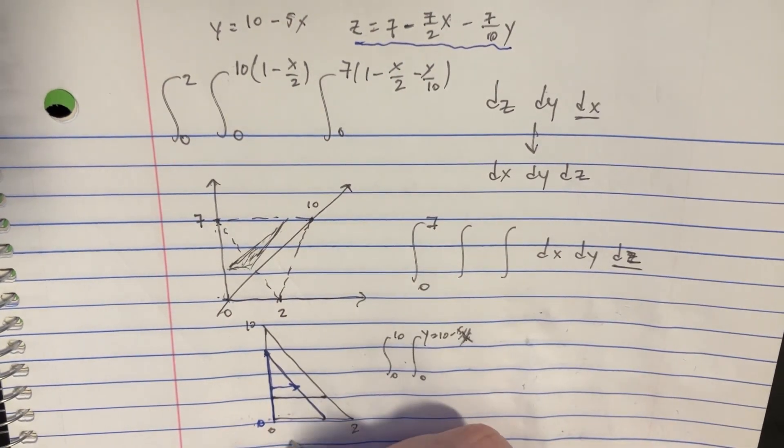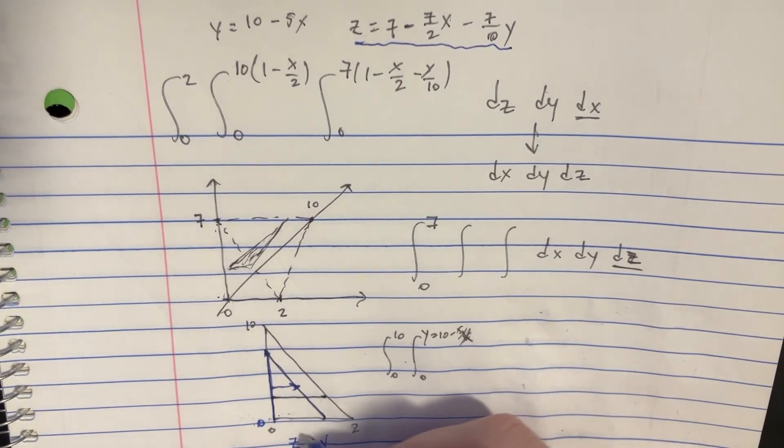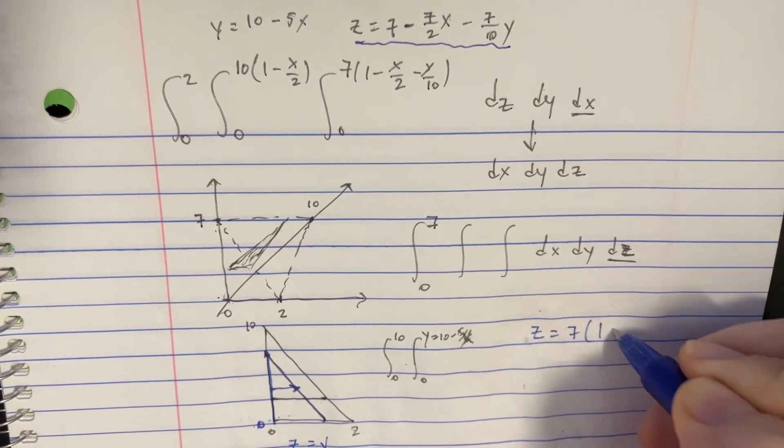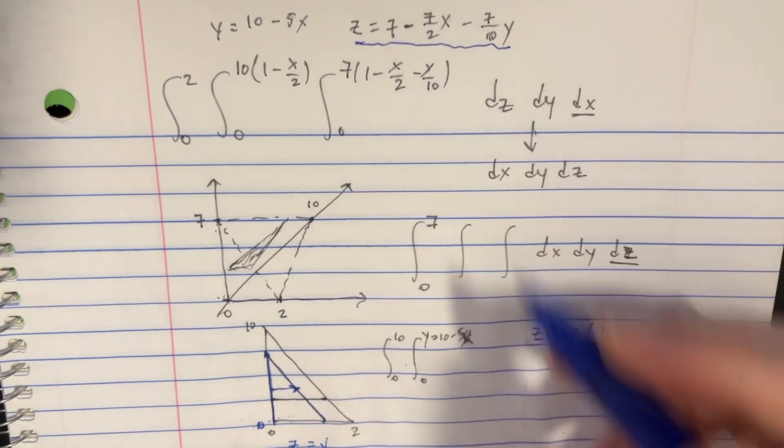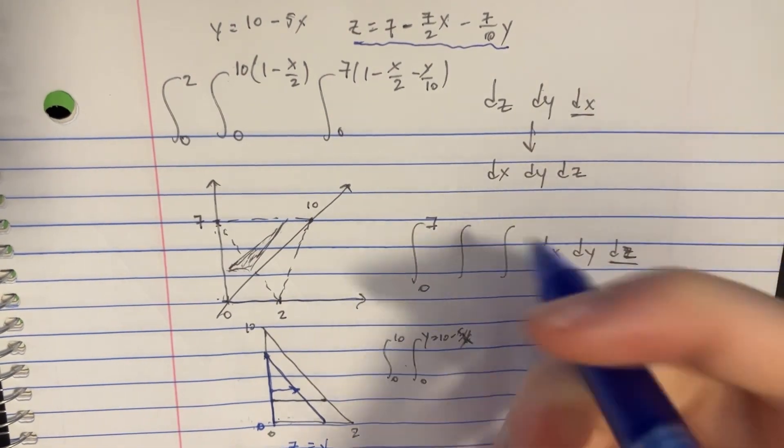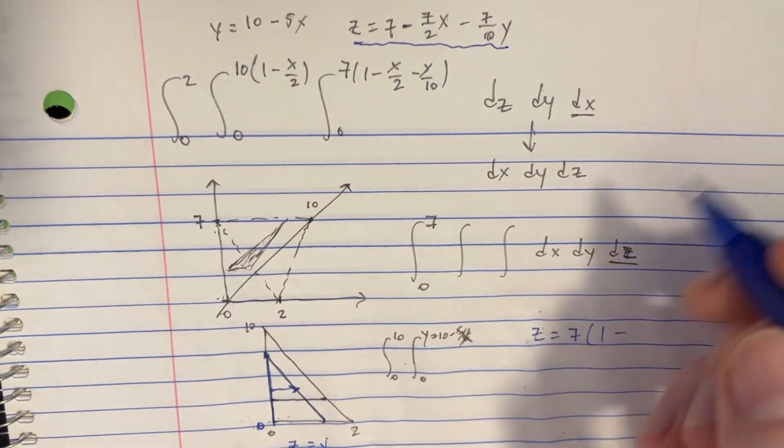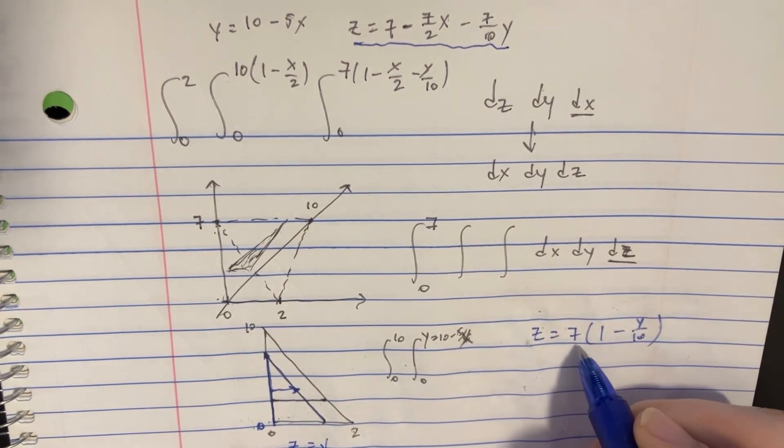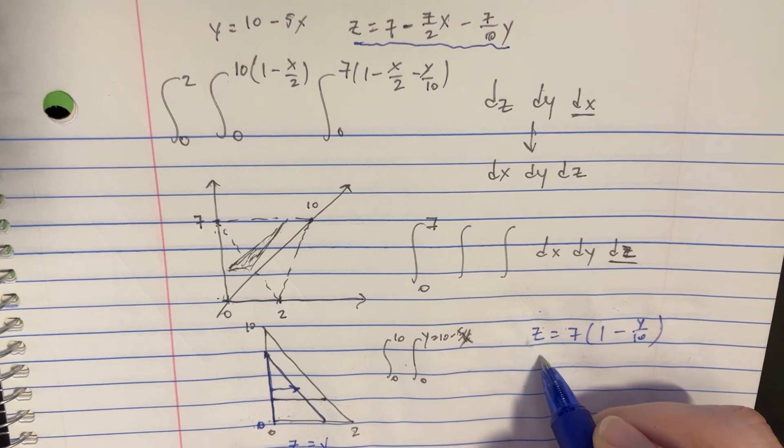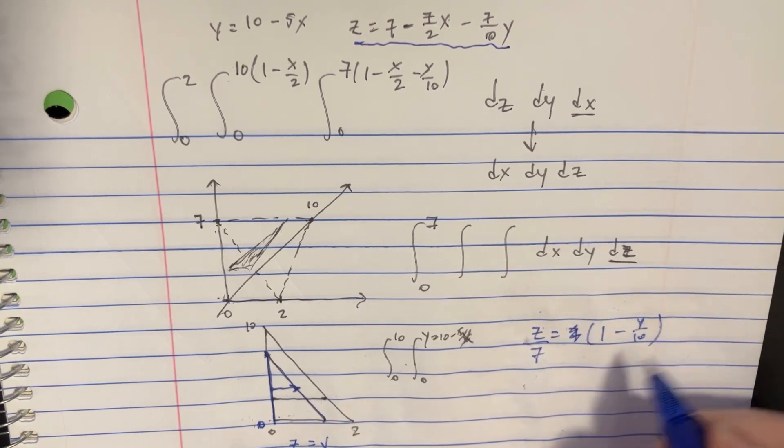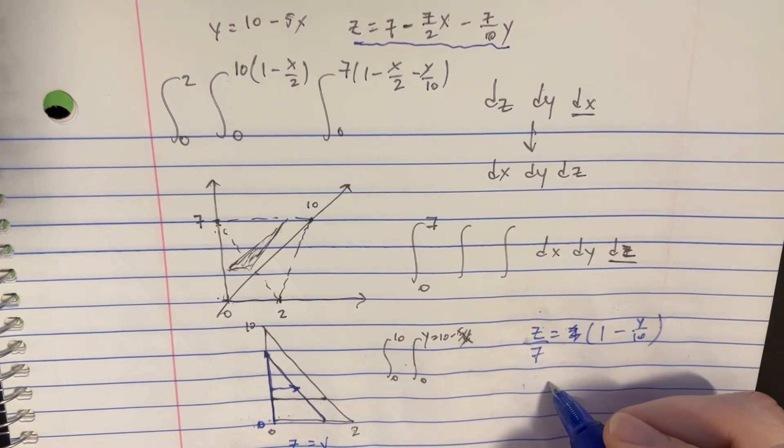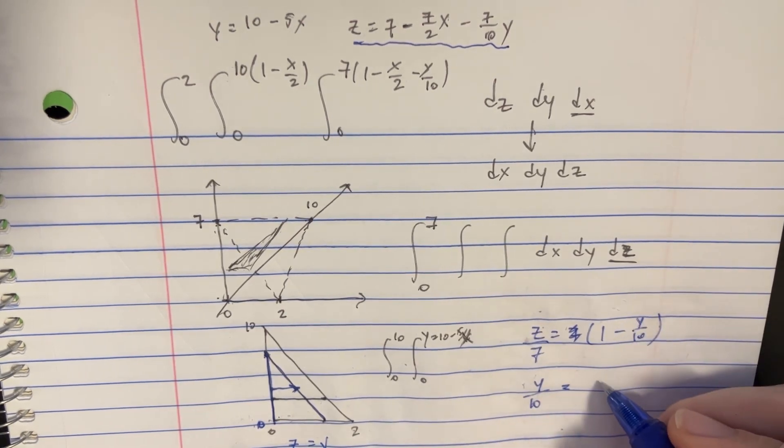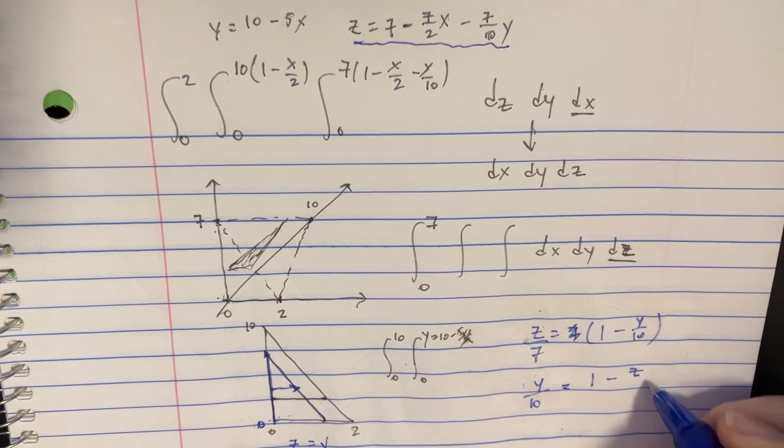So we can use the new z value that we've discovered, because now z equals something. We can use that in this equation. 7, 1 minus... We're going to get rid of the x's because it's just 0. So we're just going to say y over 10. And now we can divide this by 7. And then we can swap those two.